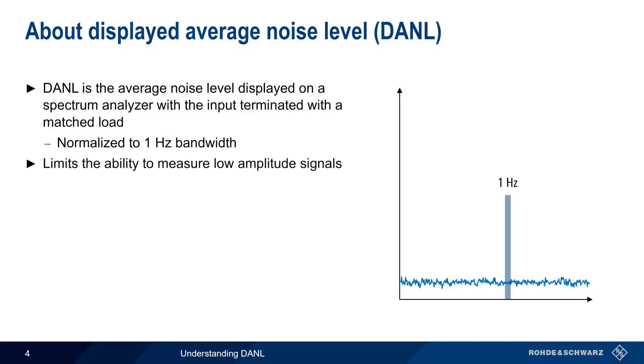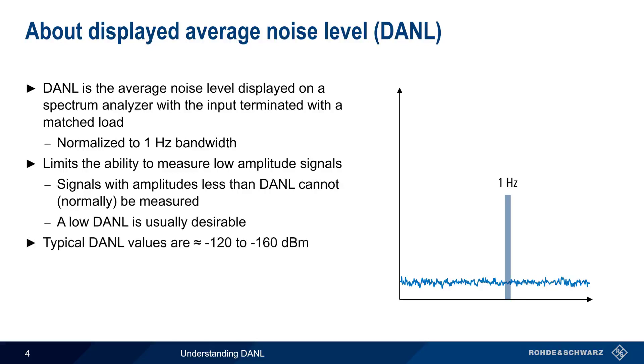DANL limits the analyzer's ability to measure low level or low amplitude signals. In most cases, signals with amplitudes less than DANL, or signals below the noise floor, cannot be measured. And therefore a low DANL is usually desirable. Typical DANL values for modern spectrum analyzers are usually in the range of about minus 120 to minus 160 dBm, and will vary by both frequency and measurement settings.